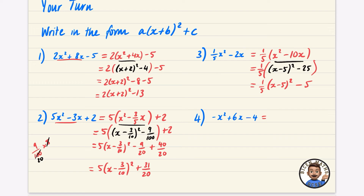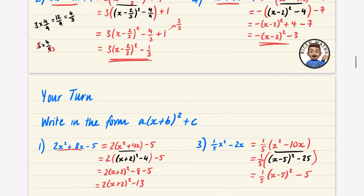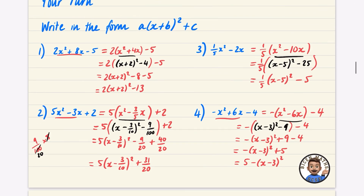Last one: factorise out the negative from the first two terms, giving −(x² − 6x) − 4. Complete the square: −[(x − 3)² − 9] − 4. Expanding: −(x − 3)² + 9 − 4 = −(x − 3)² + 5. I'd probably write this as 5 − (x − 3)², starting with the positive term. The reason I didn't rearrange the previous question is that both terms were negative, so I was happy to leave it as is.